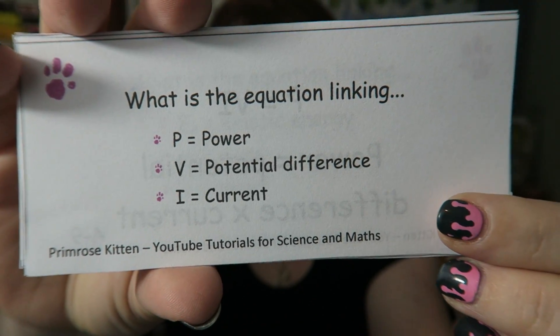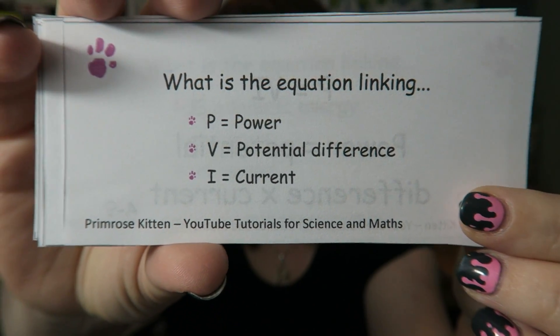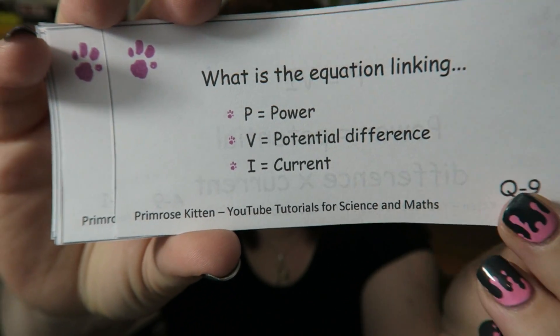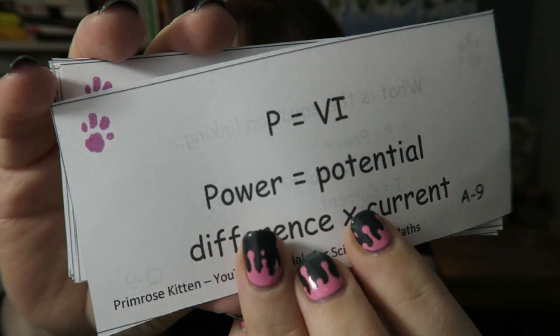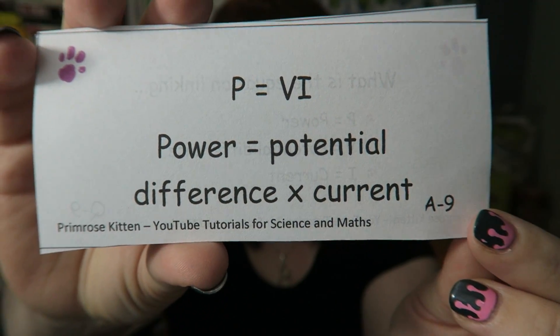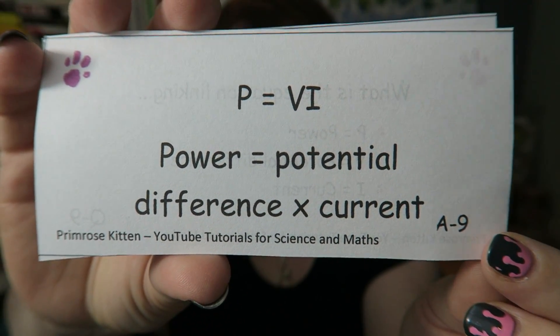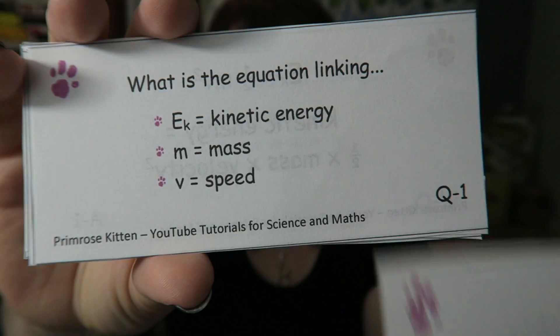What is the equation linking power, potential difference, and current? Power equals potential difference times current.